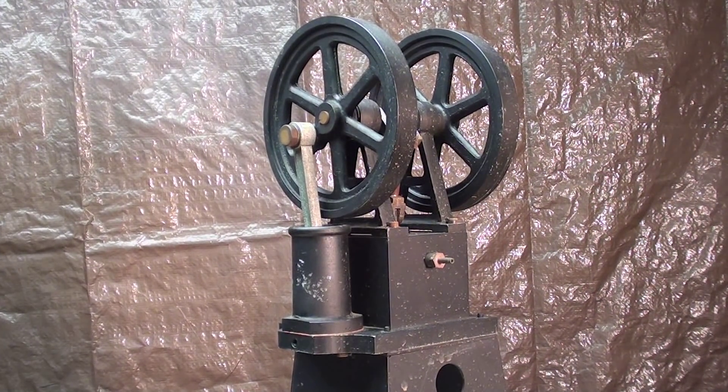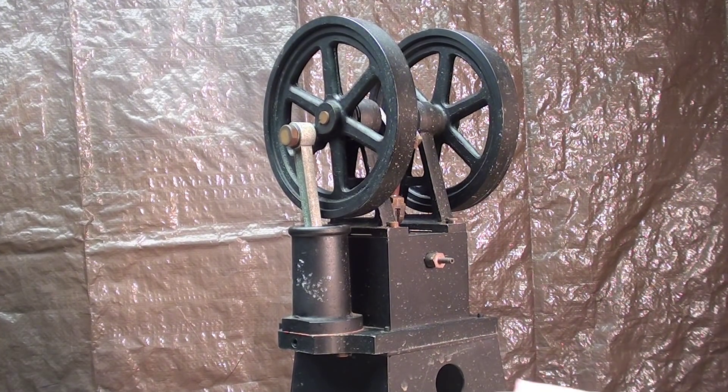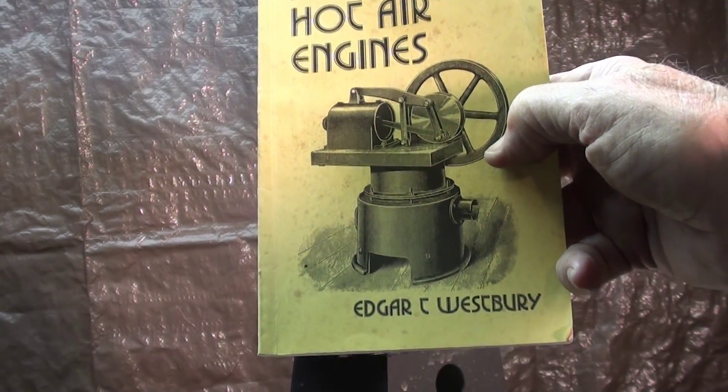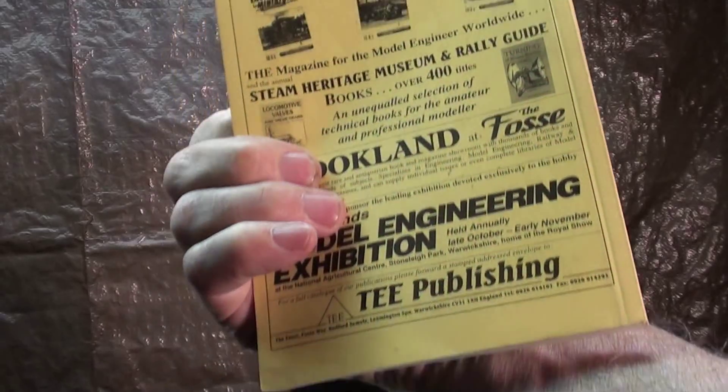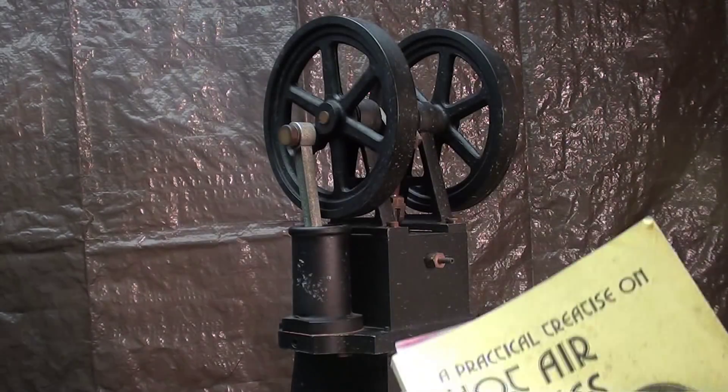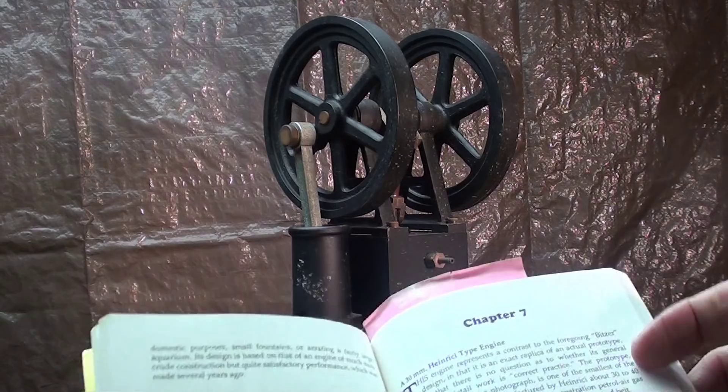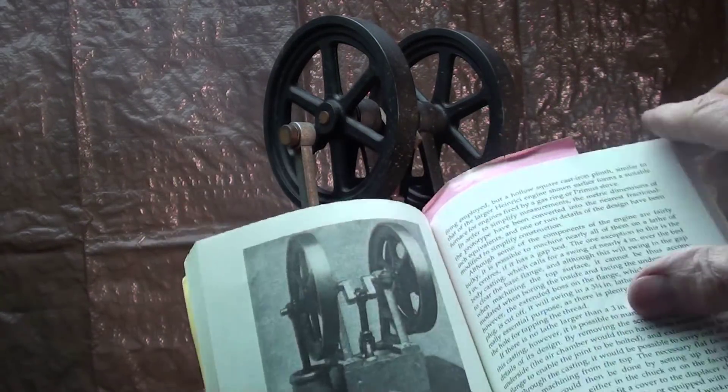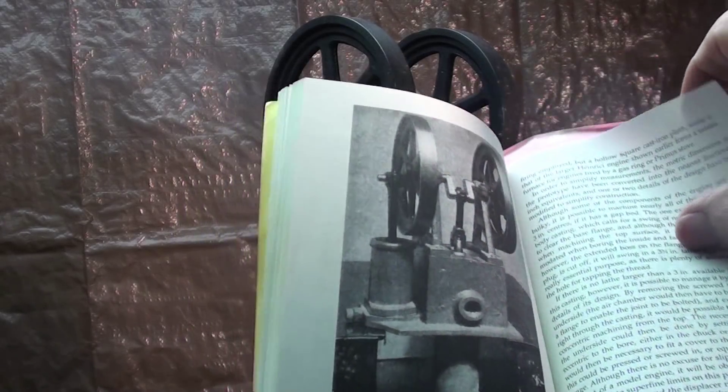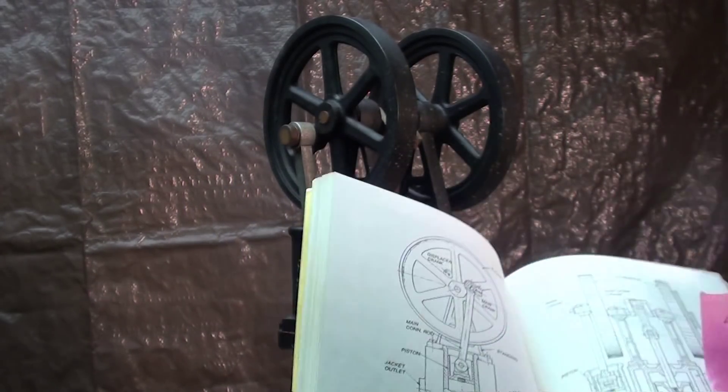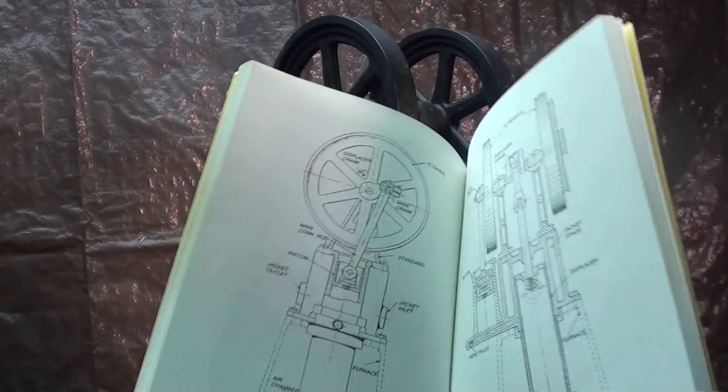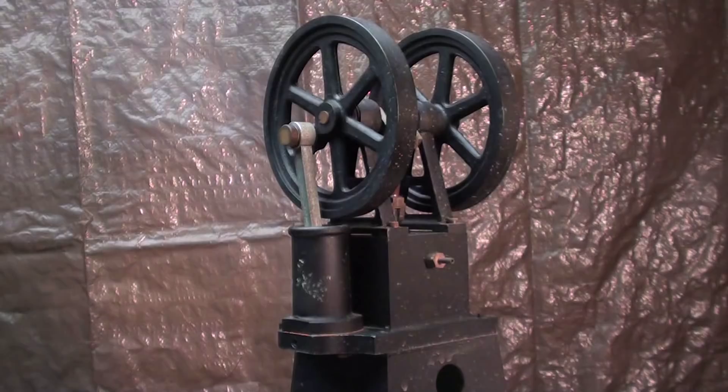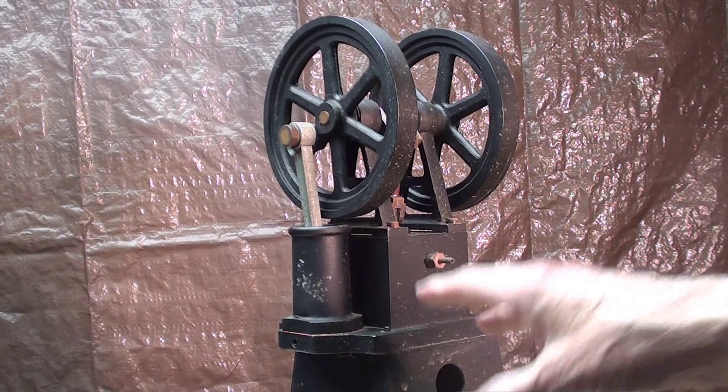There were no plans for this, but I had this book, A Practical Treatise on Hot Air Engines by Edgar Westbury. This is a TEE Publication from the UK and they've got great books. In here, chapter seven is all about this Heinrich engine, and although there are no plans, there's all kinds of information about it. These aren't really working drawings but the general idea of how they work is in here. So I made some castings and some of this is just fabricated metal.